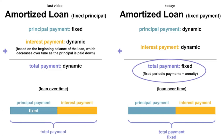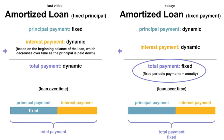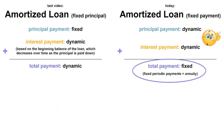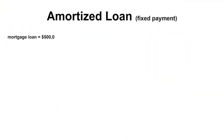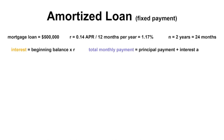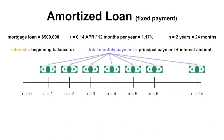Mortgages are a common example of an amortized loan, but how do we know how much of the fixed payment goes towards paying off the principal and how much of the fixed payment is paid towards the interest each period? Let's take a loan of $500,000 with an annual interest rate of 14%, compounded monthly over two years. This time, we want to determine a fixed payment to be paid monthly, inclusive of interest and principal payments. To calculate this, we will use the annuity formula to determine the fixed payment.